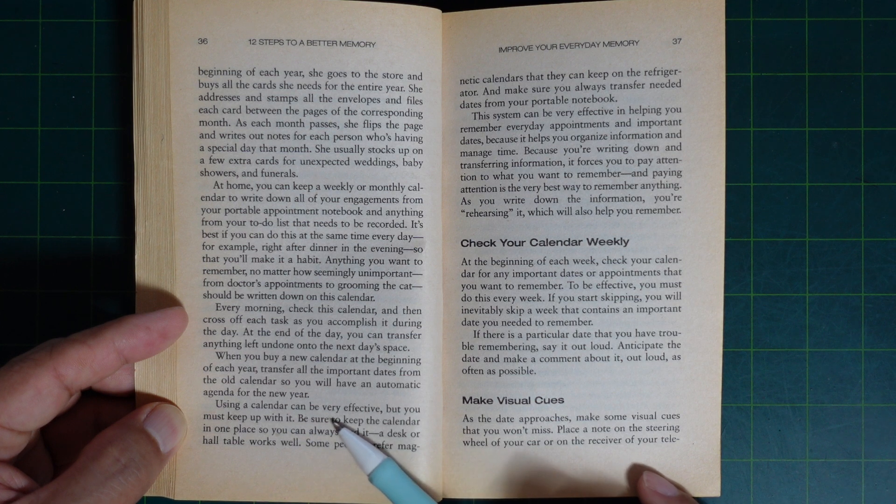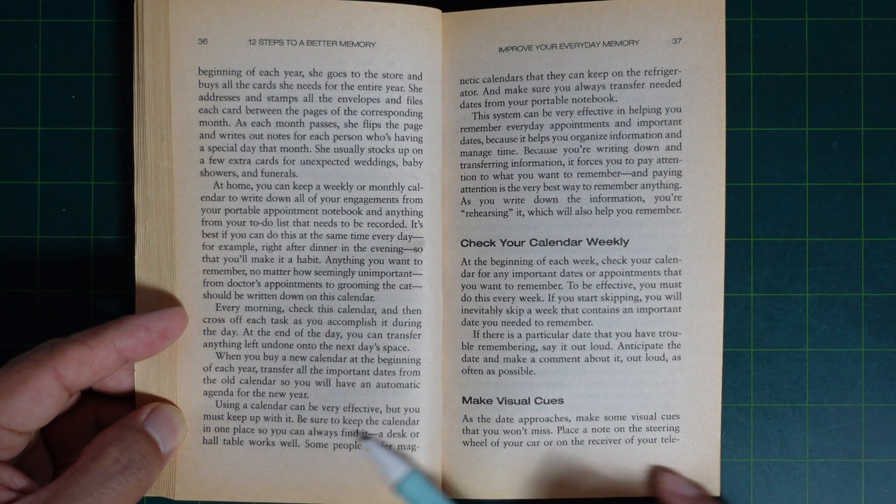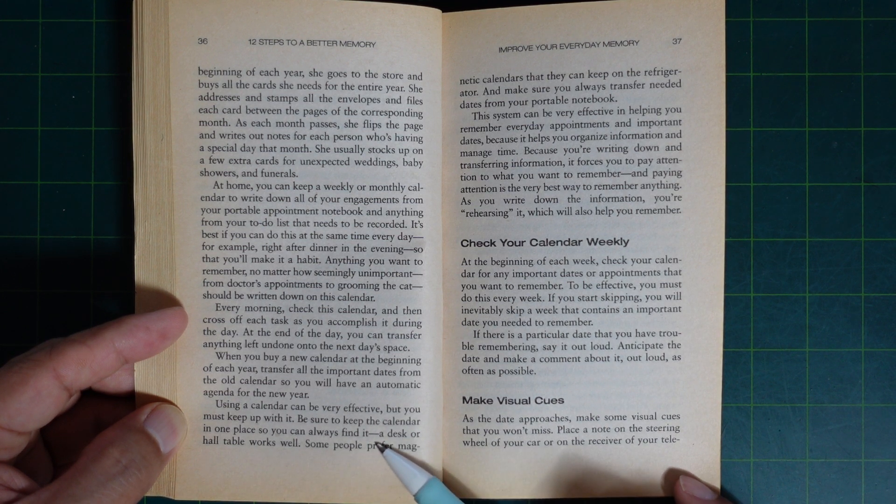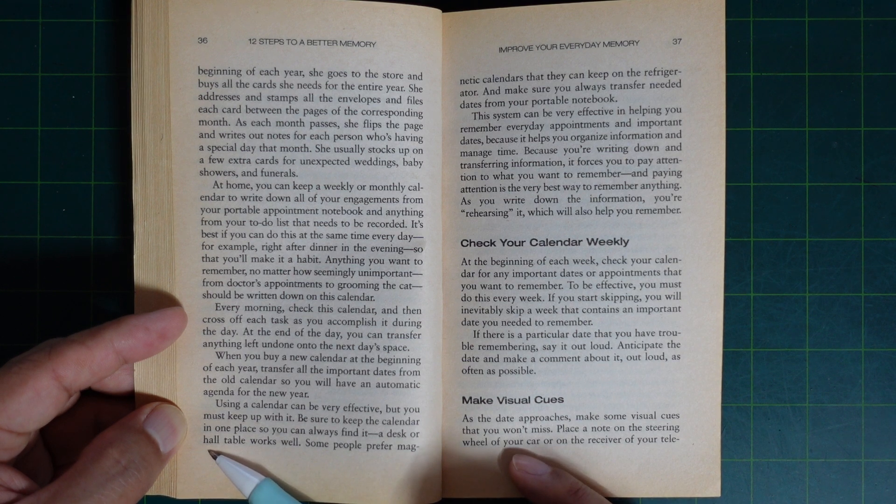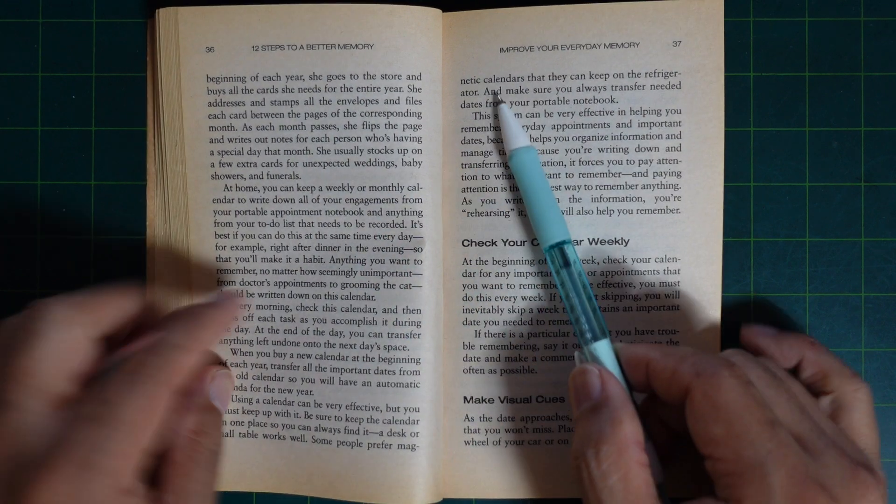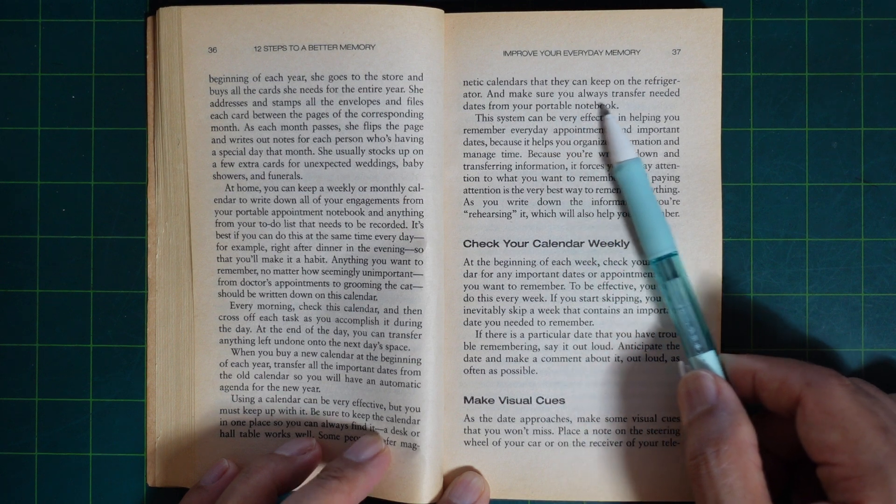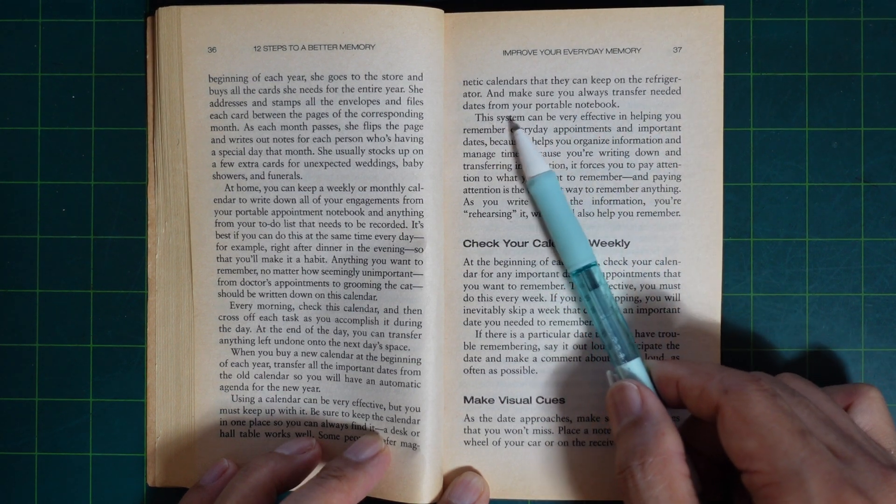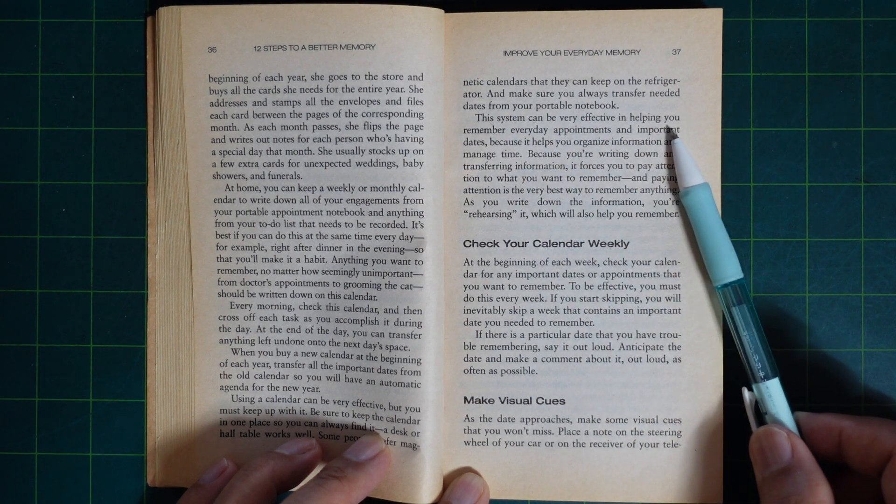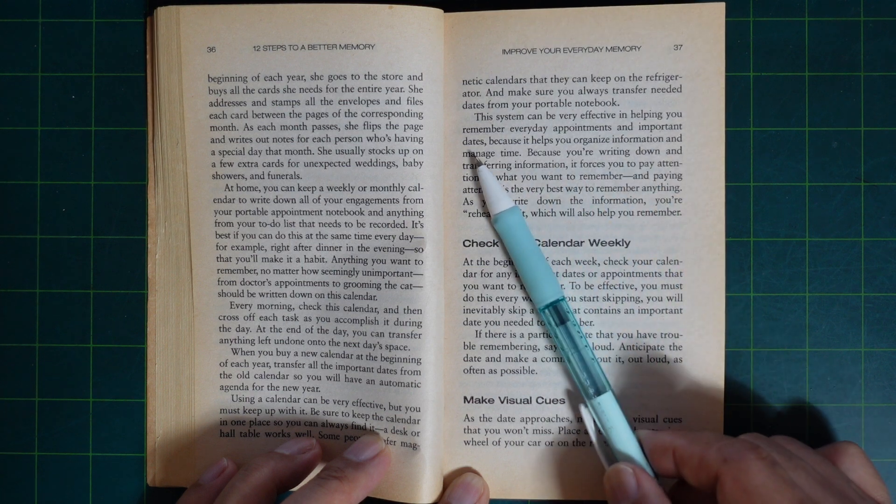Using a calendar can be very effective, but you must keep up with it. Be sure to keep the calendar in one place so you can always find it. A desk or a hall table works well. Some people prefer a magnetic calendar that they can keep on the refrigerator, and make sure you always transfer needed dates from your portable notebook. This system can be very effective in helping you remember everyday appointments and important dates.